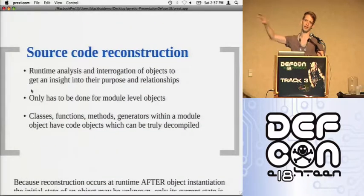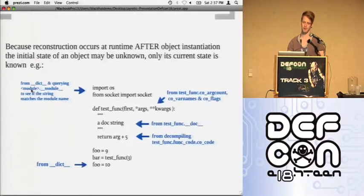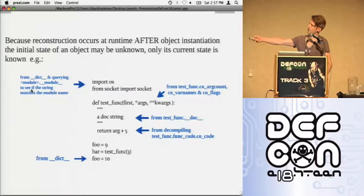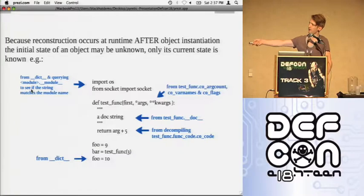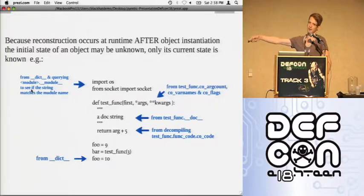Rather than decompiling the byte stream, we prod and poke at the objects and ask questions of them at runtime, and from the answers we make a good guess at what they look like in source code. If we can access a function, we get the code object and decompile that. For reconstruction, we query many objects. Some things we can't get — like if bar is calling test_function_three, we can only get the return value. Similarly, if foo was initially nine then set to ten, we only get ten because we have no pre-state history.